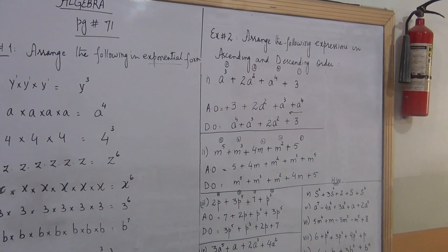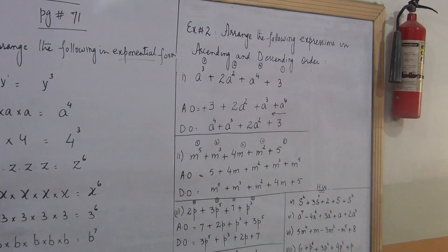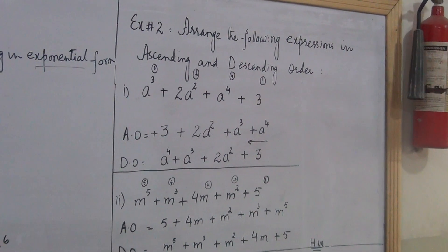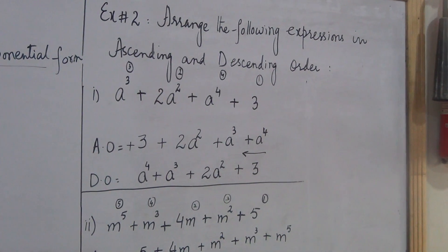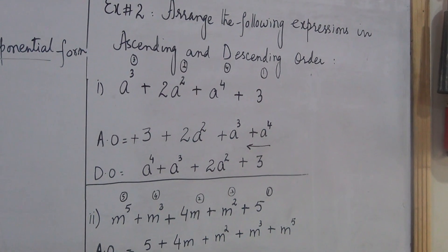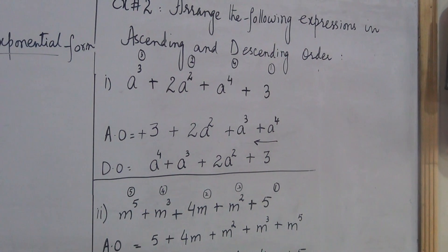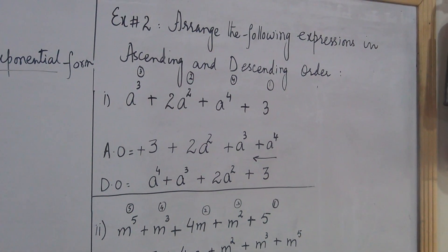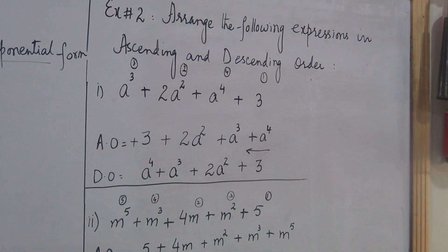Exercise 2 I also explained to you a little bit. Question number 1 I explained to you — we studied how we can arrange expressions in ascending and descending order. Ascending order means from smallest to greatest. Descending means from greatest to smallest.